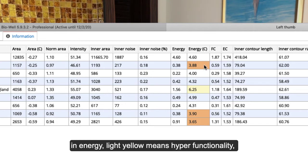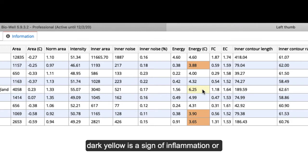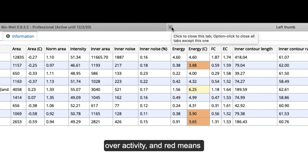Orange means low in energy, light yellow means hyper-functionality, dark yellow is a sign of inflammation or overactivity, and the color red means depletion of energy.